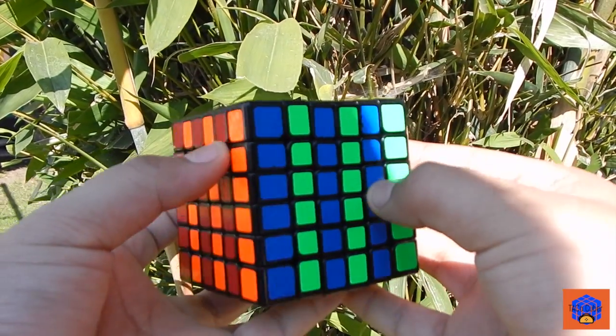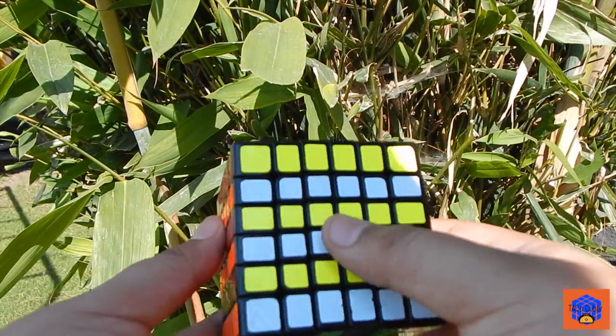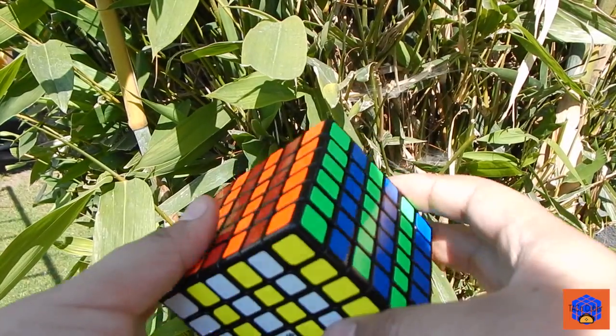As with all Chiii cubes recently, this 6x6 features matte stickers with custom shades. I think these are great, especially the dark blue.